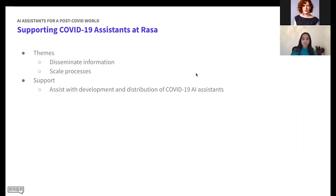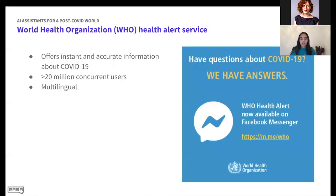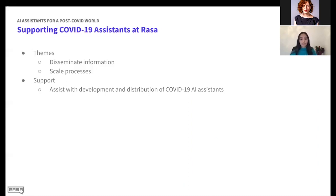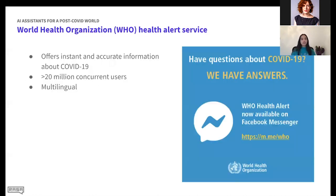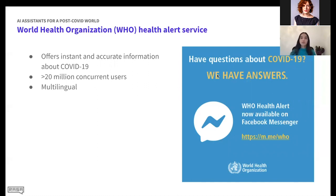We've devoted time to answering questions, assisting with design and development of these assistants, and connecting people working on similar projects. We've also devoted a page on our website listing all COVID-19 resources together. One of the first projects we assisted with is the WHO COVID-19 Health Alert Service. It answers questions and facts about the disease and is available on Facebook Messenger in English, French, Arabic, Spanish, Swahili, and other languages. It has over 20 million concurrent users, with the potential to reach 4.2 billion people.